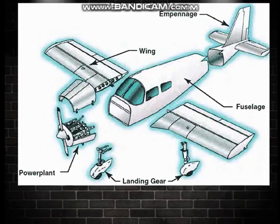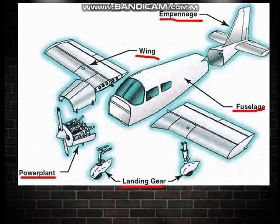In this video, we will be talking more about the fuselage of an aircraft. Firstly, there are 5 basic components in an aircraft: the wing, the empennage, the fuselage, the landing gear, and the power plant.